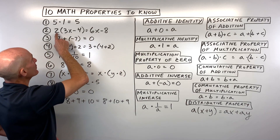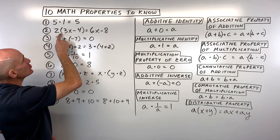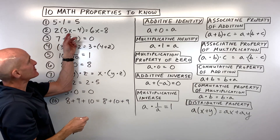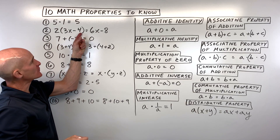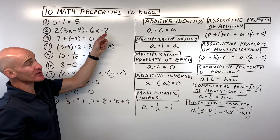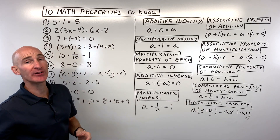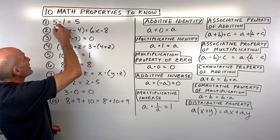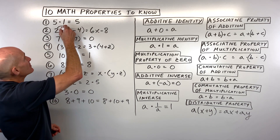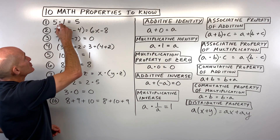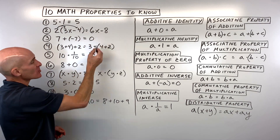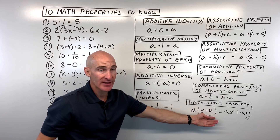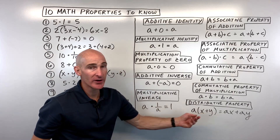For number two, we have two times the quantity (3x minus 4) equals 6x minus 8. You can see that the two was multiplied into the parentheses — that's called the distributive property.